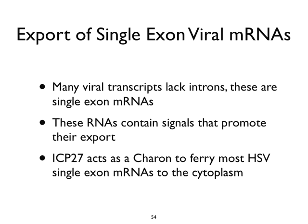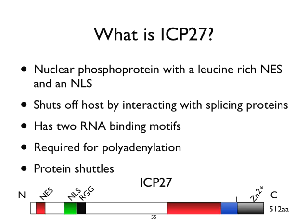One example is the herpesvirus protein ICP27, which acts as a chaperone to ferry most virus messenger RNAs across the nuclear membrane because most of them are not spliced — so they're not seen as bona fide structures by the host mechanism. This is a nuclear phosphoprotein with a nuclear export signal, so it can be taken out of the nucleus; a nuclear localization signal, so it can go back in; and two regions that bind RNA. It's required for polyadenylation of virus messages. What we want to talk about here is shuttling — moving from the nucleus, grabbing an RNA that hasn't been marked, and bringing it into the cytoplasm.